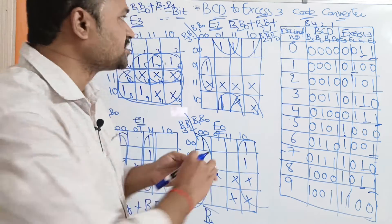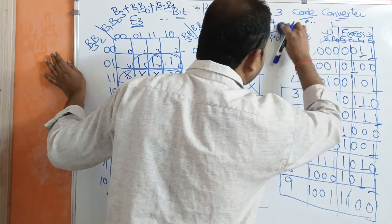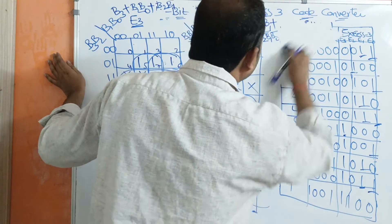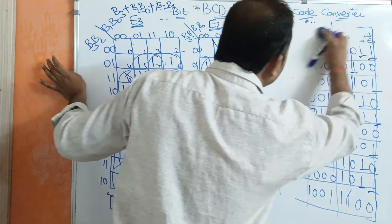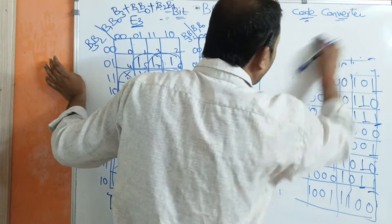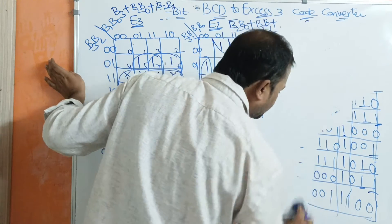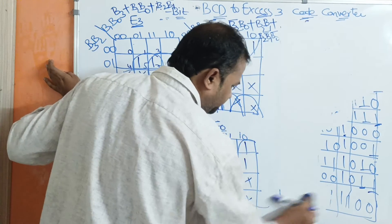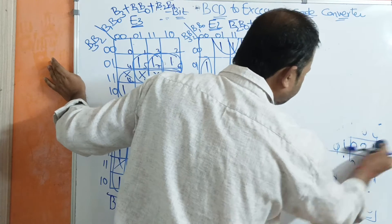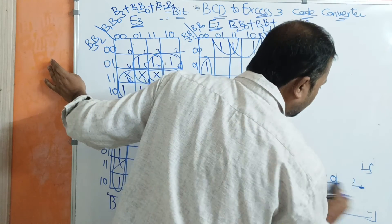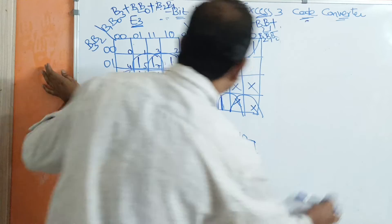Now let us draw the logic circuit diagram. For the converter, our major focus is on the logic circuit diagram. In order to draw it, we need the simplified expressions derived from the Karnaugh map, which in turn required the truth table. The inputs are B3, B2, B1, and B0. We also need their complements: B3 bar, B1 bar, and B0 bar.